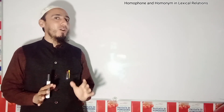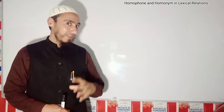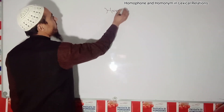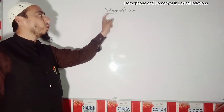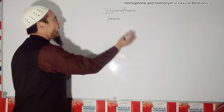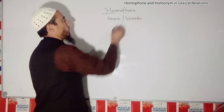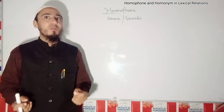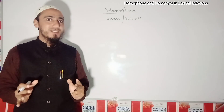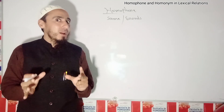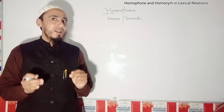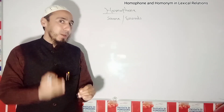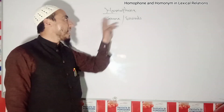Whenever we are talking about the difference between homophones and homonyms, it is important that we know the derivation of these two words. The word 'homophone' is derived from Greek. 'Homo' means same or alike, and 'phon' means sound. So 'homophone' is the combination of two words. Now, what is the definition of homophones? Homophones are words which have the same pronunciation but different spellings and meanings.